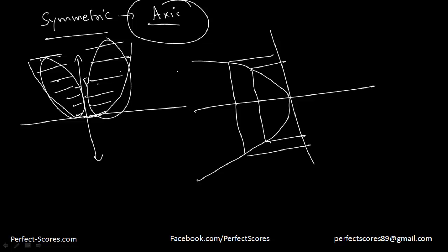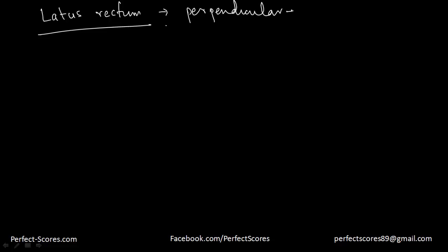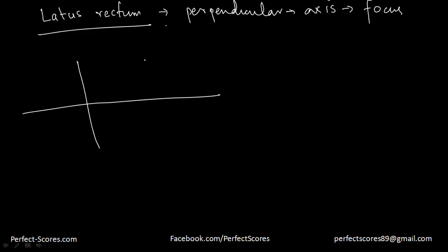There is one last thing you have to understand: what is known as the latus rectum of a parabola. It is the chord which is perpendicular to the axis of the parabola and passes through the focus point. So if this is a parabola and this is its focus point, the latus rectum is the perpendicular line from the top to the bottom of the parabola passing through the focus. Let's find the latus rectum of a parabola with focus at (a, 0).